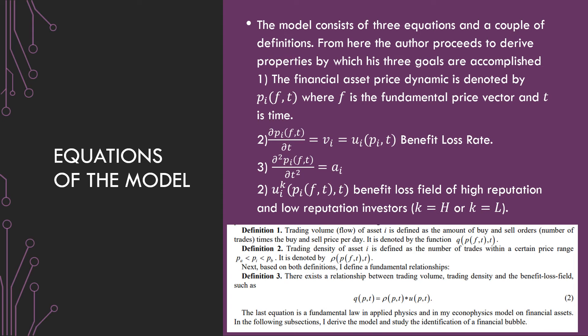So this is this number of trades. This third definition is that there exists a relationship between trading volume, trading density, and benefit loss field. So we have this QPT, which is the trading volume, is equal to the trading density times this benefit loss rate here. So it's those two here.